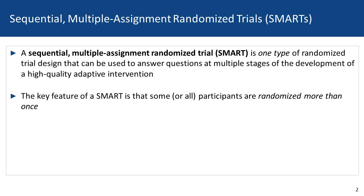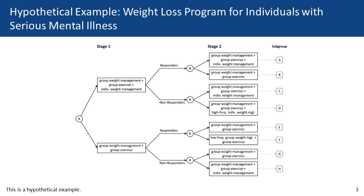The key feature of a SMART is that some or all participants are randomized more than once. Let's take a look at an example SMART in the context of a hypothetical weight loss program for individuals with serious mental illness.